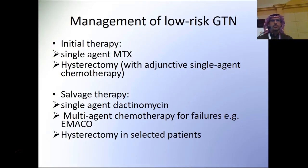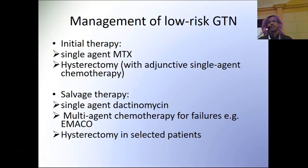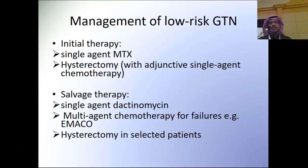Initial therapy is single-agent methotrexate. Hysterectomy may be considered for patients who do not desire fertility, and may reduce chemotherapy exposure, though one course of chemotherapy is usually given post-surgery to treat micro-metastatic disease. Salvage therapy includes single-agent dactinomycin. If a patient fails two single-agent chemotherapy regimens, multi-agent chemotherapy like EMA-CO may be considered, and hysterectomy in selected patients with chemo-resistant Stage 1 disease.